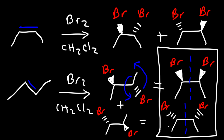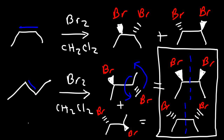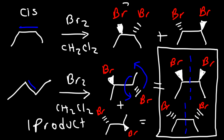They're exactly the same. So for trans-2-butene reacting with bromine, that gives us only one product. Whereas cis-2-butene with Br2 gives two products. You need to watch out for meso compounds.